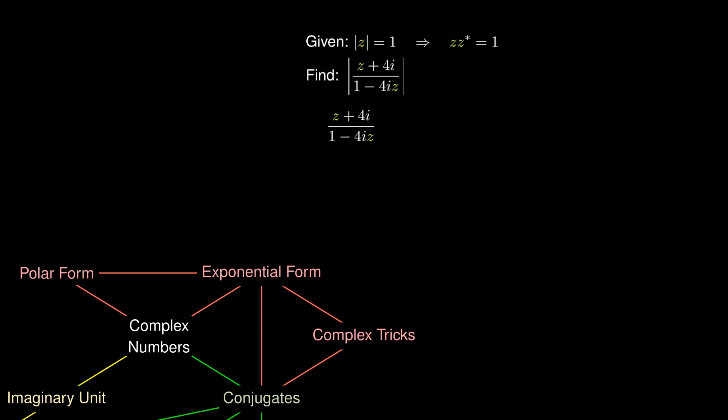The 1 is sitting right there, and since 1 = z·z*, we replace 1 with z·z*, factor z from the denominator, and observe something rather fascinating.